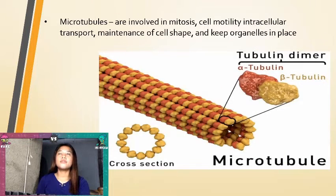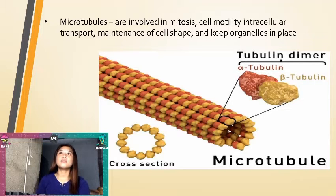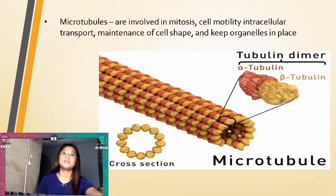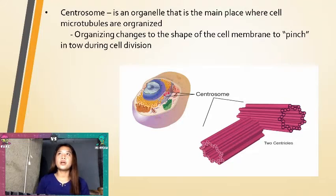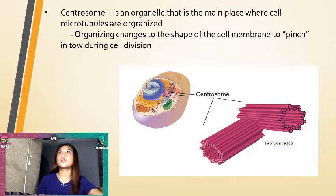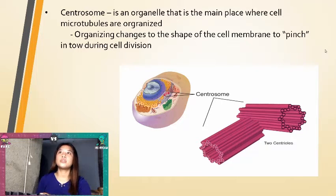Microtubules are involved in mitosis, cell motility, intracellular transfer, maintenance of cell shape, and keeping organelles in place. The centrosome is an organelle that is the main place where cell microtubules are organized, organizing changes to the shape of the cell membrane to pinch and divide during cell division.